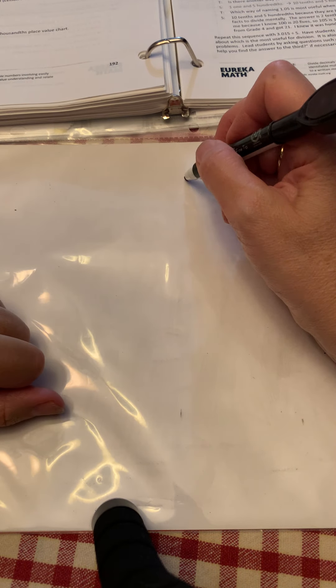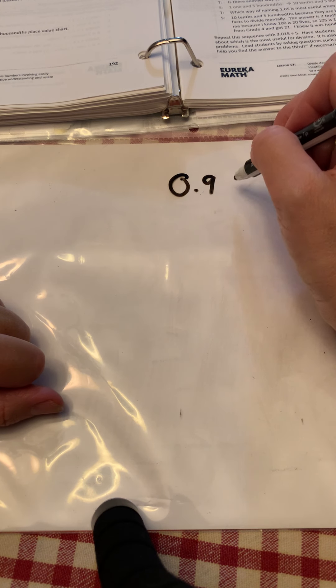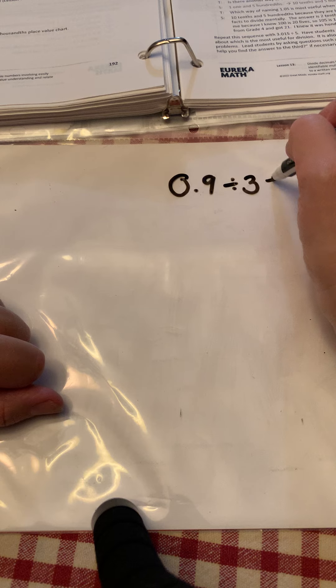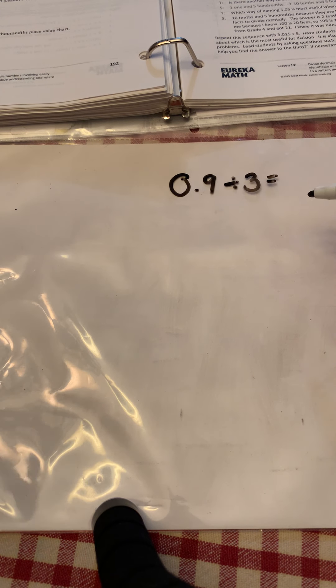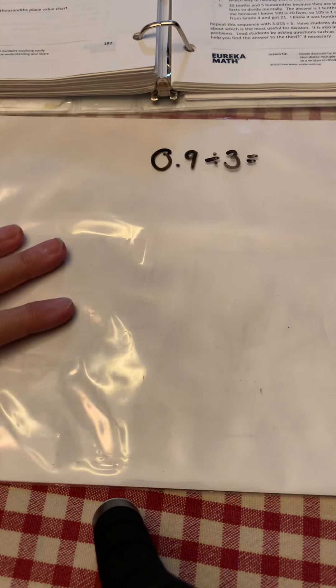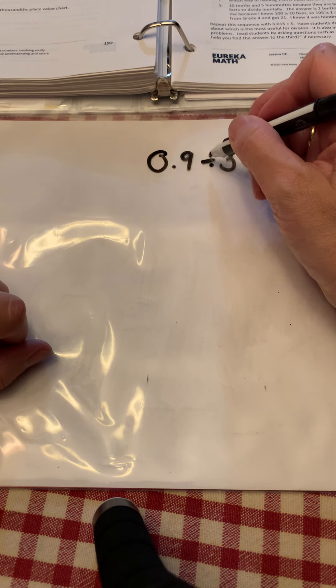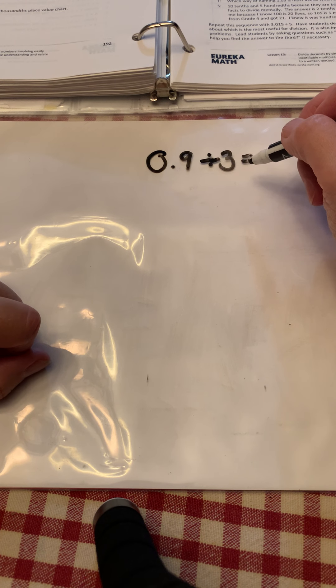So for our first problem, we're going to look at the problem 9 tenths divided by 3, and we're going to see if we can figure out what 9 tenths divided by 3 is. For this activity, you're going to need either your personal whiteboard or a piece of paper, so you can press pause and go grab those, and press play when you are ready.